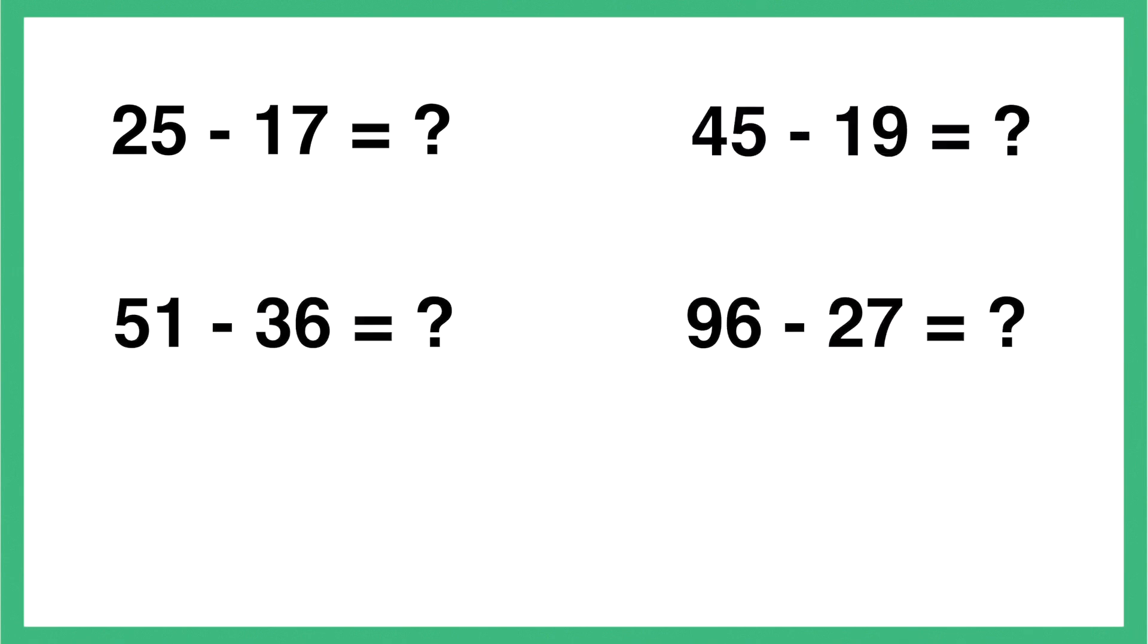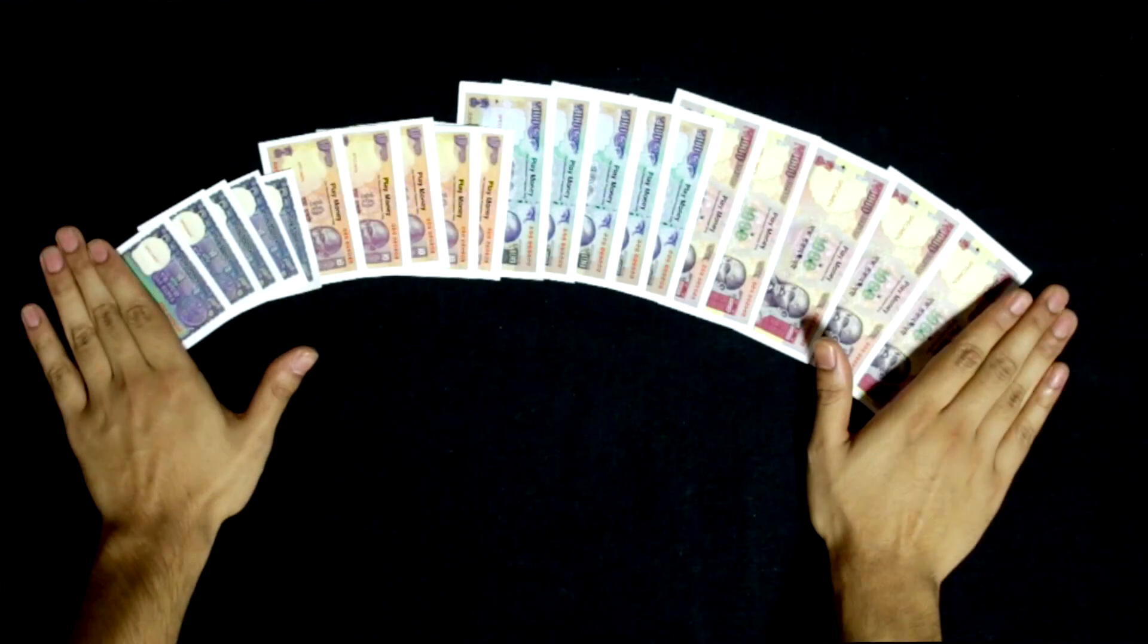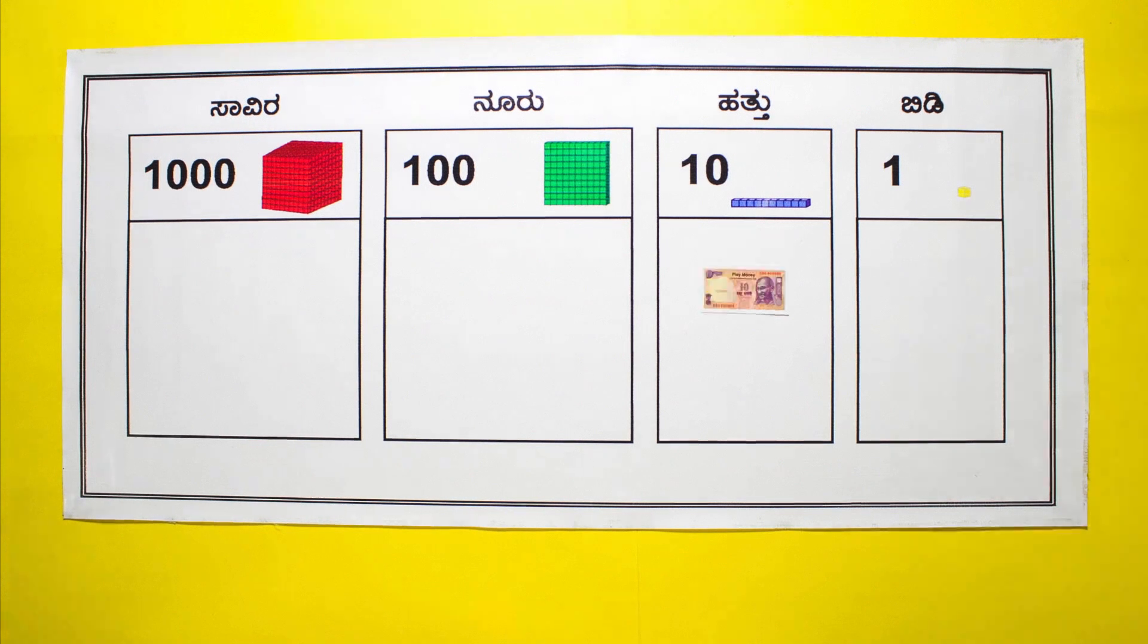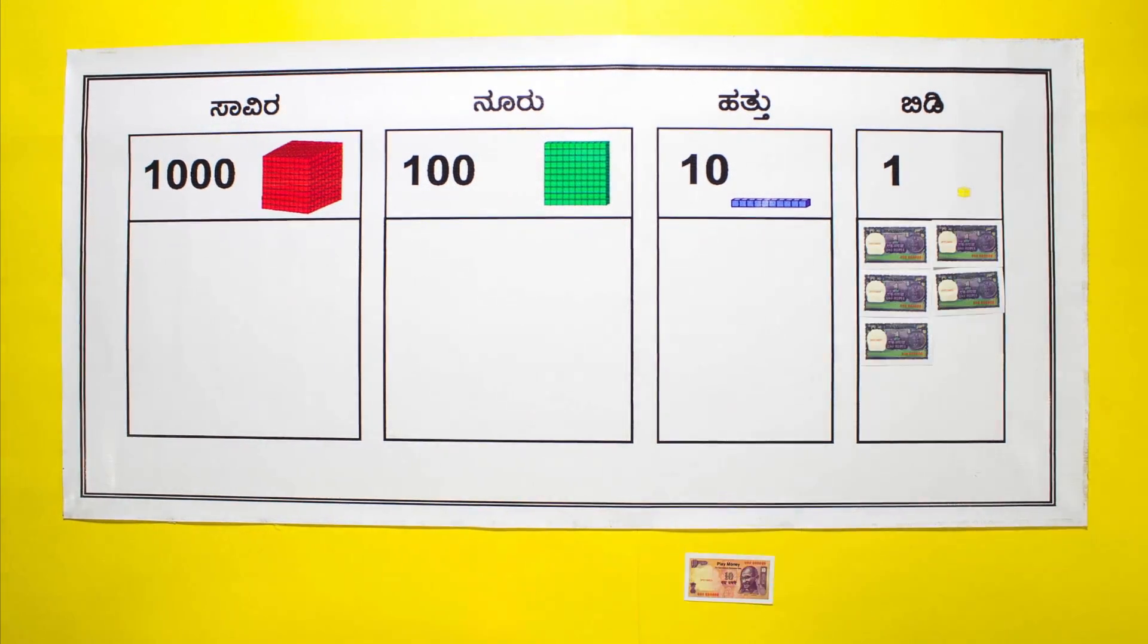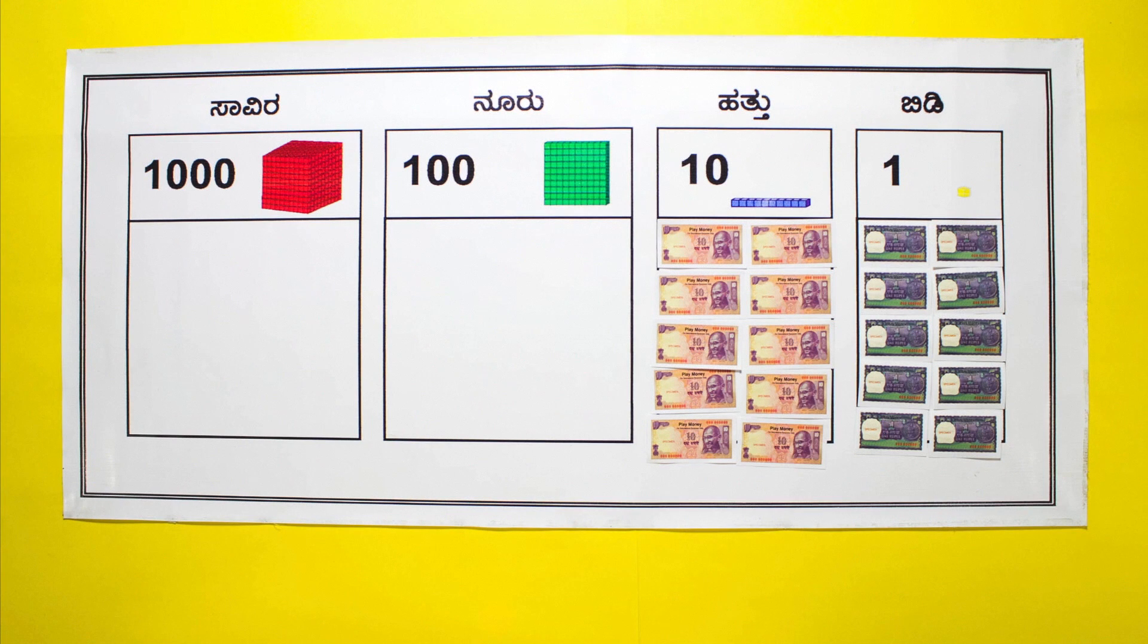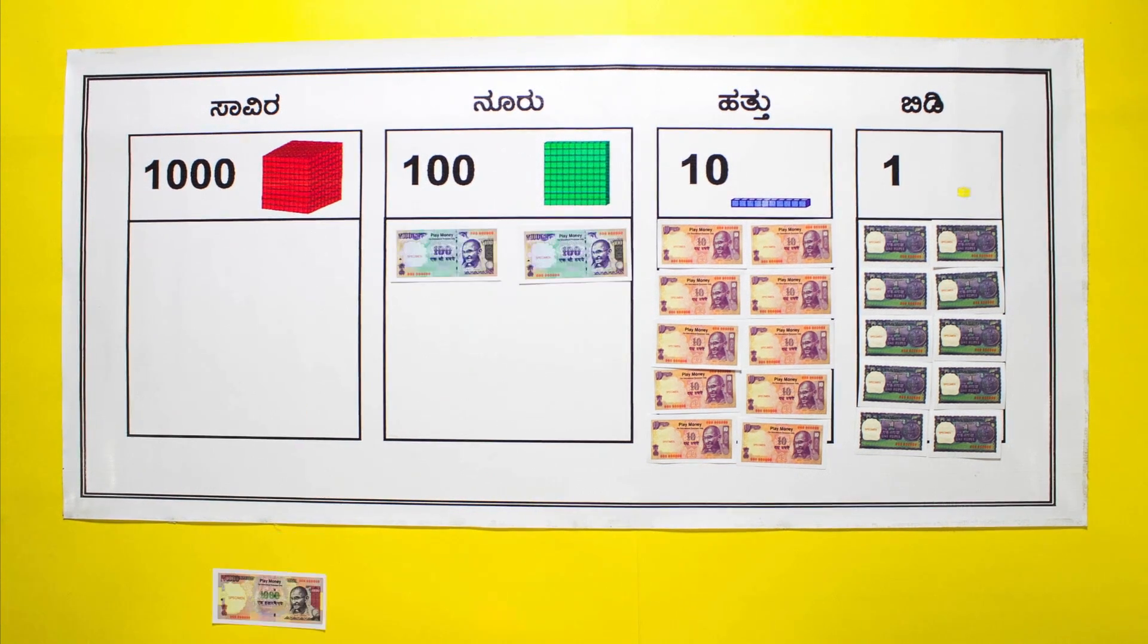Let students try a few more problems to get confidence before moving on to larger numbers. Children learn very fast with play money. The rule of grouping by tens applies here as well. 1 ten rupee note can be regrouped as 10 one rupee notes. 1 hundred rupee note can be regrouped as 10 ten rupee notes, and 1 thousand rupee note can be replaced by 10 hundred rupee notes.